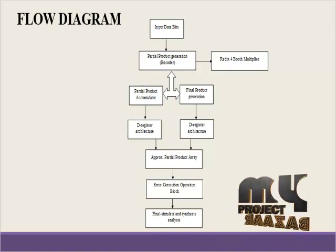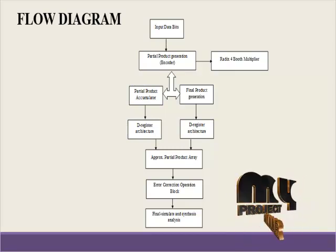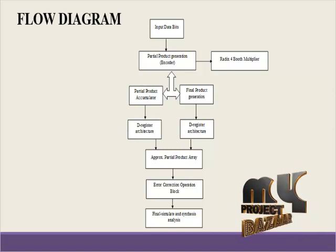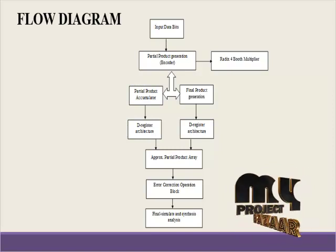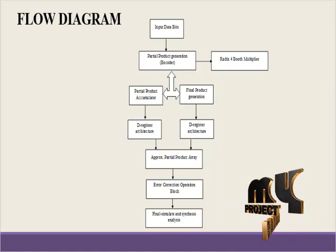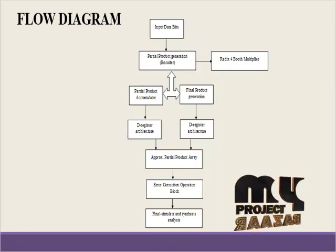We set up the register-based structure and proceed to the multiplications. After that, we go into the array formation of the RAM positions, where we implement store, read, and write operations for the partial product array formation. Lastly, we go into the error correction operation block — wherever an error occurs in the multiplications, we go to that array, encode the process, apply a distance-based method, calculate the distance, and find the error.